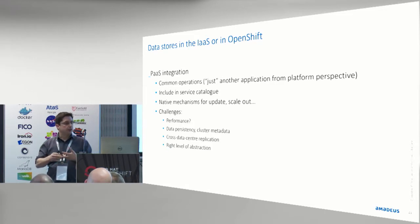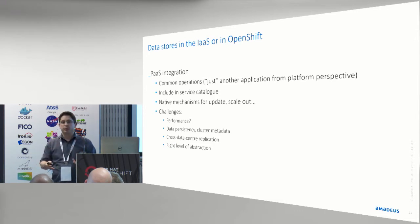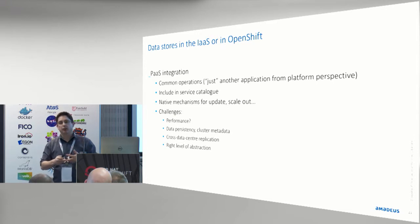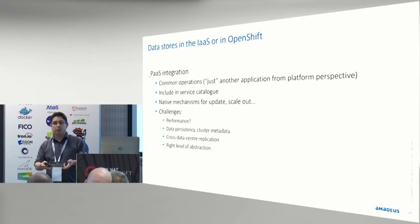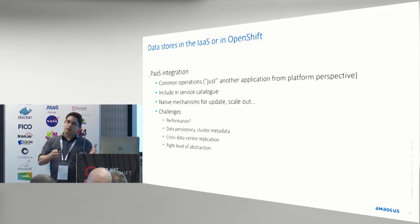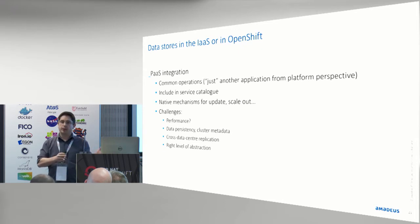Inclusion in the service catalog gives you native mechanisms for scale-out and updates built in. The challenge is always performance, though in the end if you're going to run on VMs, that's probably where the main performance penalty is, not the containerization itself. So we can consider using OpenShift on bare metal and pay less penalty for running our data stores.